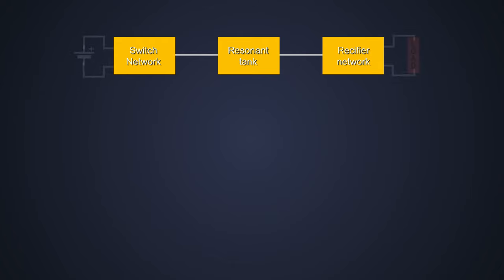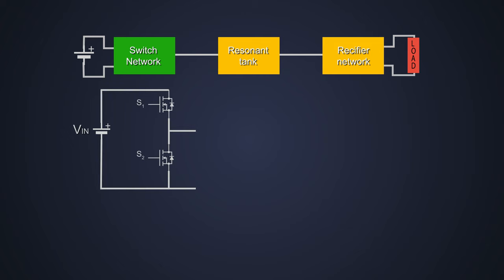So resonant converter is a type of DC to DC converter. The first block is switching network, it is also known as DC to AC converter which generates a pulsating voltage or current from a DC source with specific switching frequency. This block is basically a primary side of the isolated converters like flyback or half-bridge converters. This waveform will be in the form of a square wave.